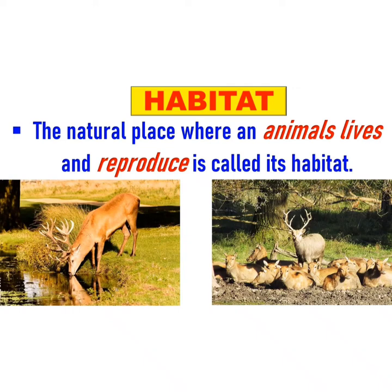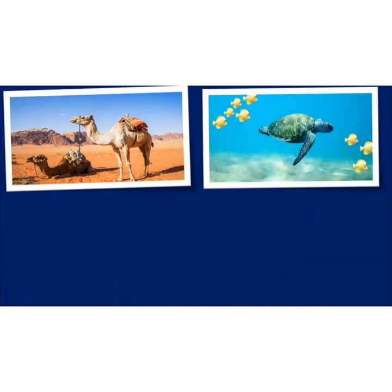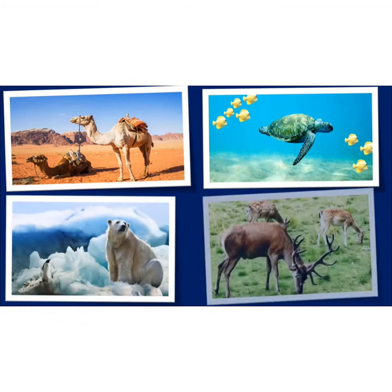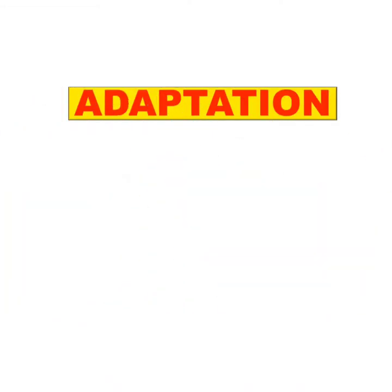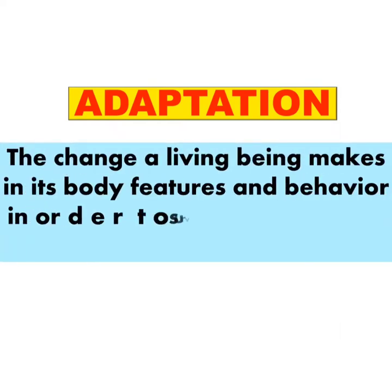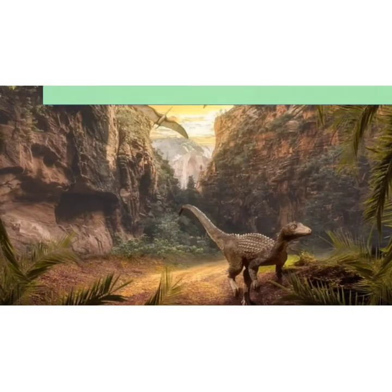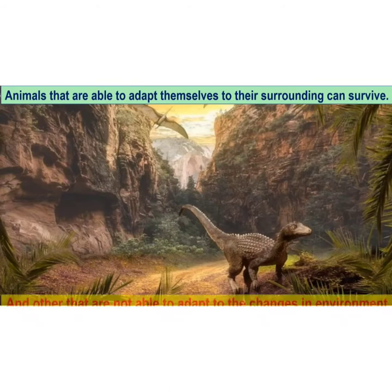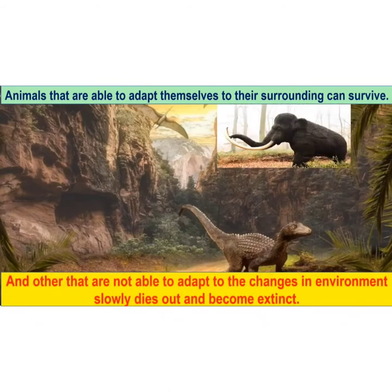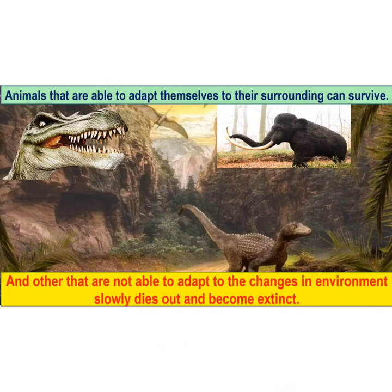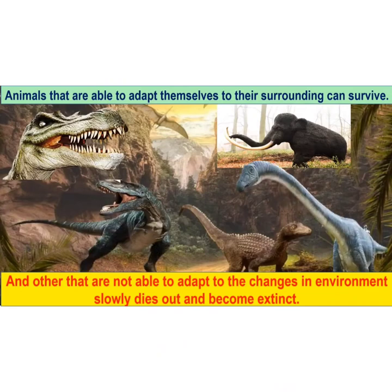To survive in a given habitat, animals need to be able to adjust themselves to the conditions of the habitat. The change a living being makes in its body features and behavior in order to survive in a habitat is called adaptation. Animals that are able to adapt themselves to their surroundings can survive, and others that are not able to adapt to changes in the environment slowly die out and become extinct.